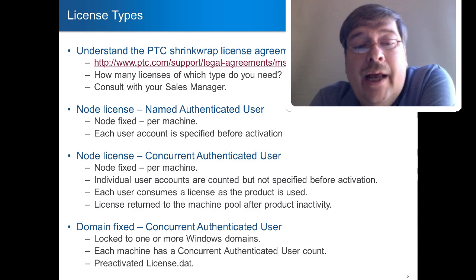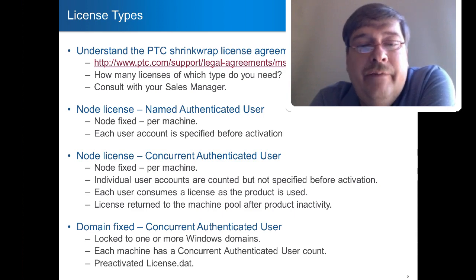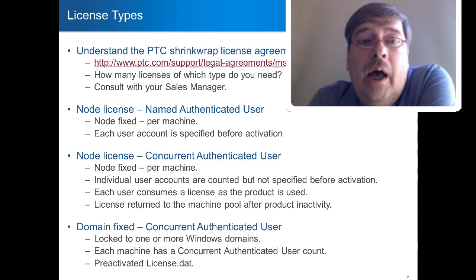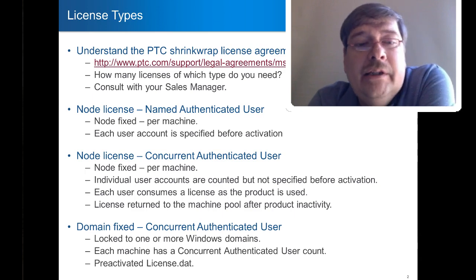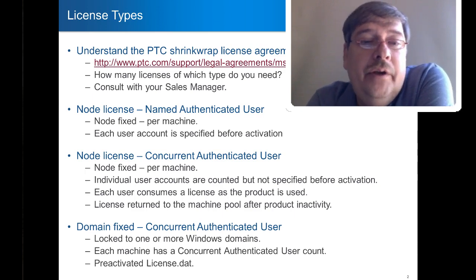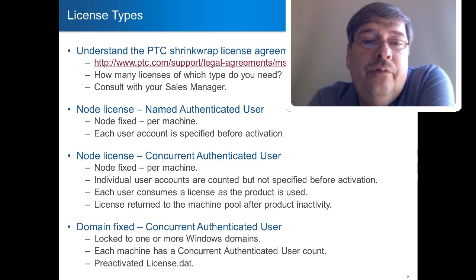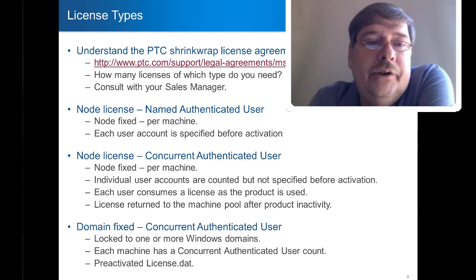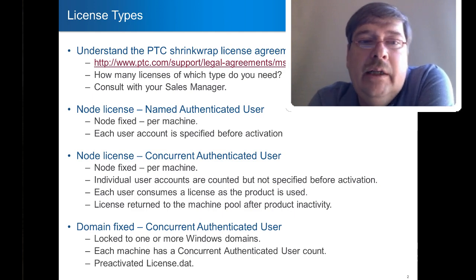Each named user must be specified before activation, so you know what machine you're going to install on and which users you're going to have — you identify those before or right at activation of the software. With concurrent, you don't necessarily know the names of all the users. Perhaps there are 20 of them, but only two will ever be logged on at the same time, in which case a concurrent license might be more reasonable. You simply mark a count at activation time — for example, decrement two or three from my license during activation.